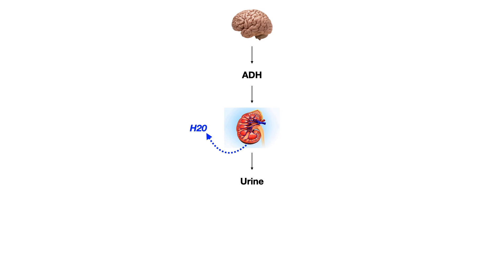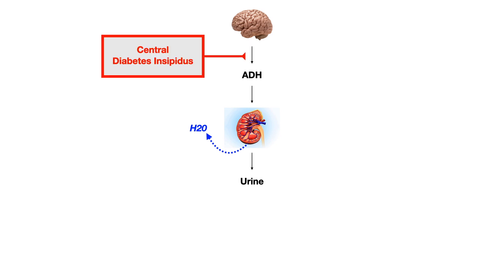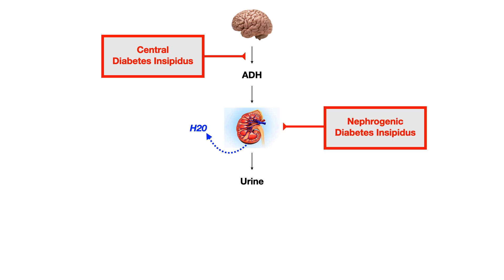The problem in central diabetes insipidus is that centrally — think central nervous system — the brain cannot produce ADH. The problem in nephrogenic diabetes insipidus is not that the brain can't produce it, but that the ADH the brain does produce can't act properly in the kidney. So central DI: problem in the CNS. Nephrogenic DI: problem in the kidney.